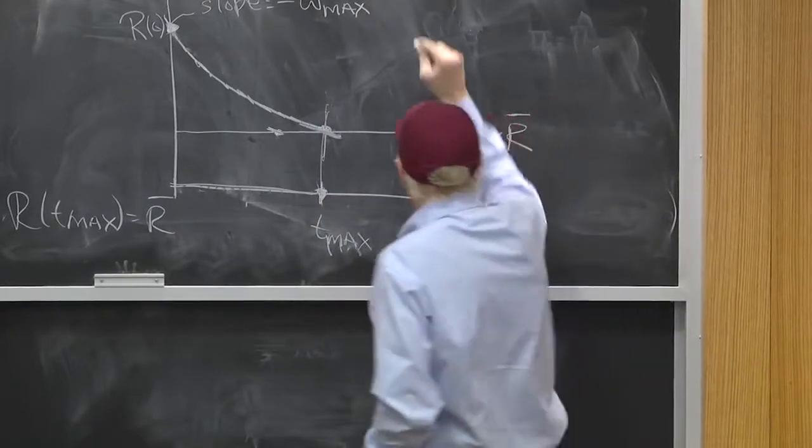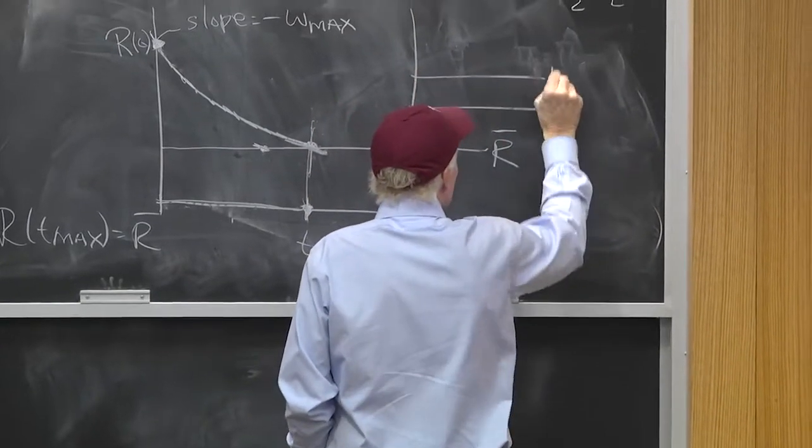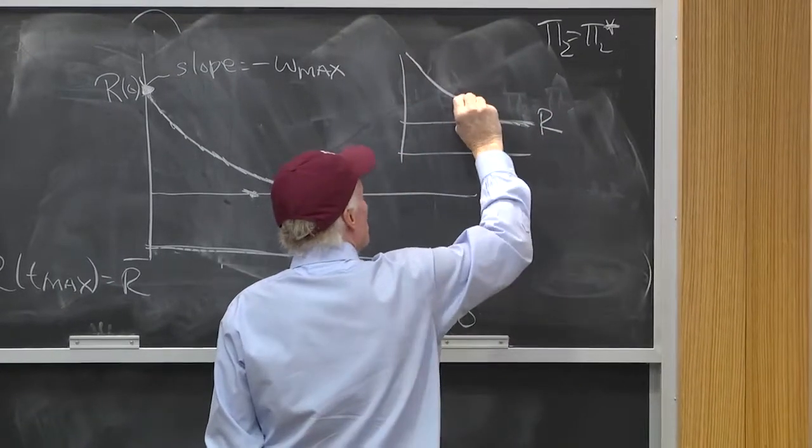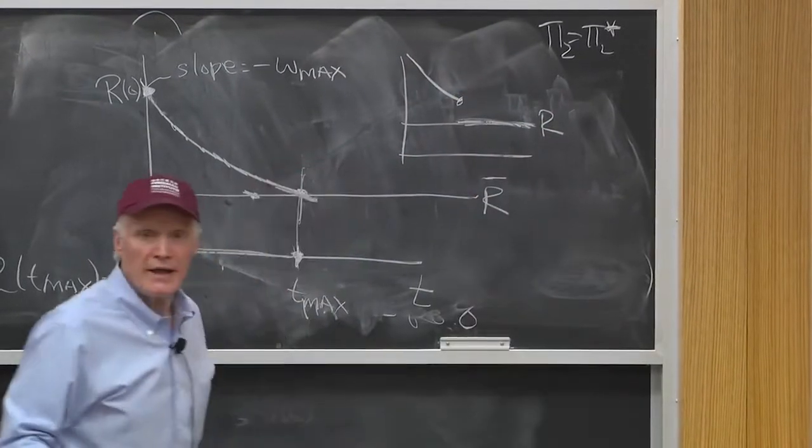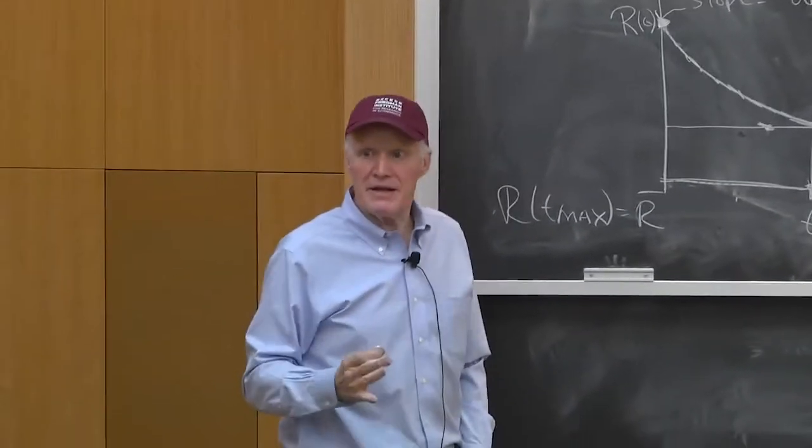Rents cannot have this equilibrium. You cannot have this land and then the prices jump up to here. Why? That cannot be an equilibrium.